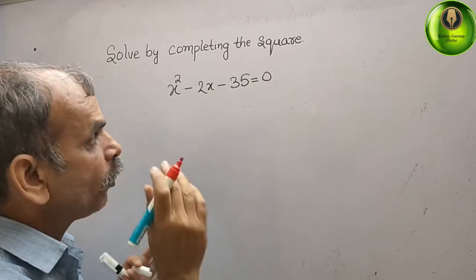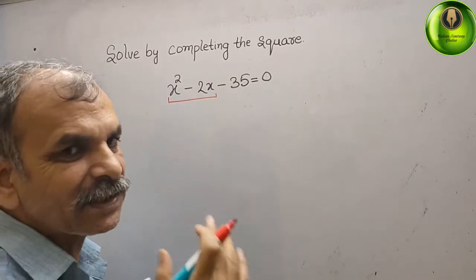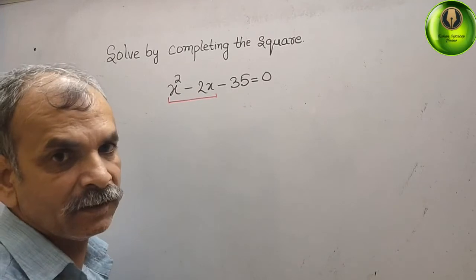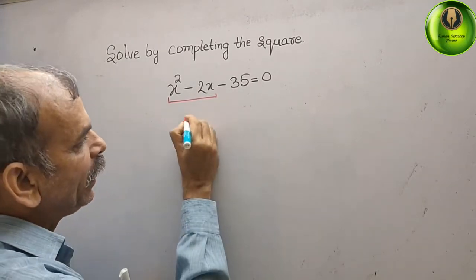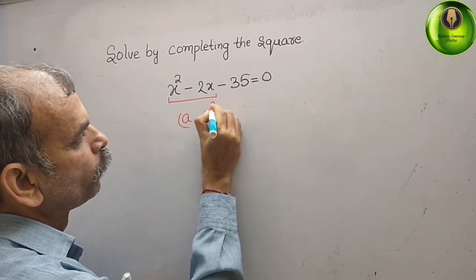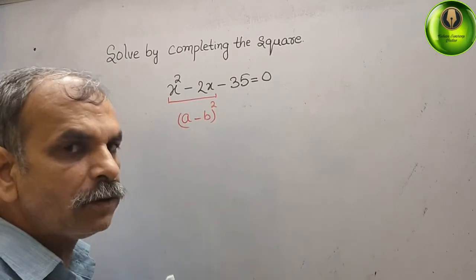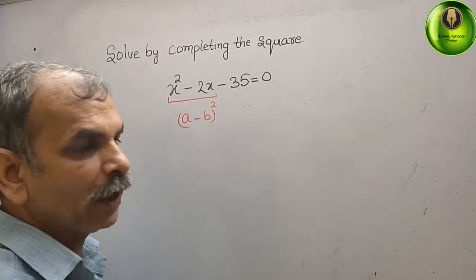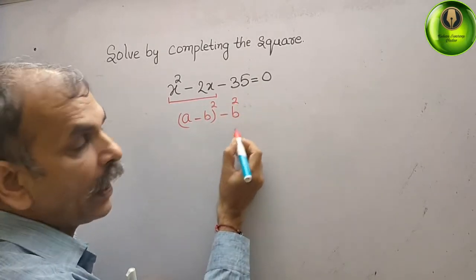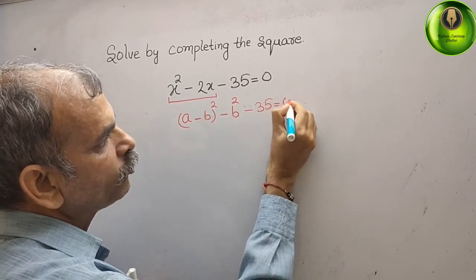Now what we have to do, just we have to see up to here. First and second term, in between that we have a minus sign. Now we will make here a minus b whole square and we should subtract b square, minus b square. And remaining is minus 35, that gives you 0.